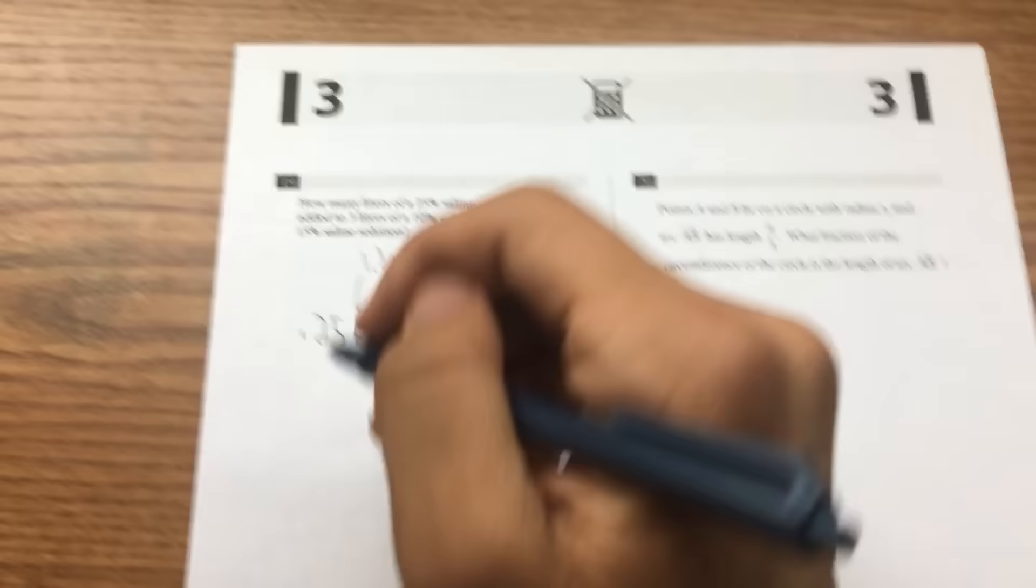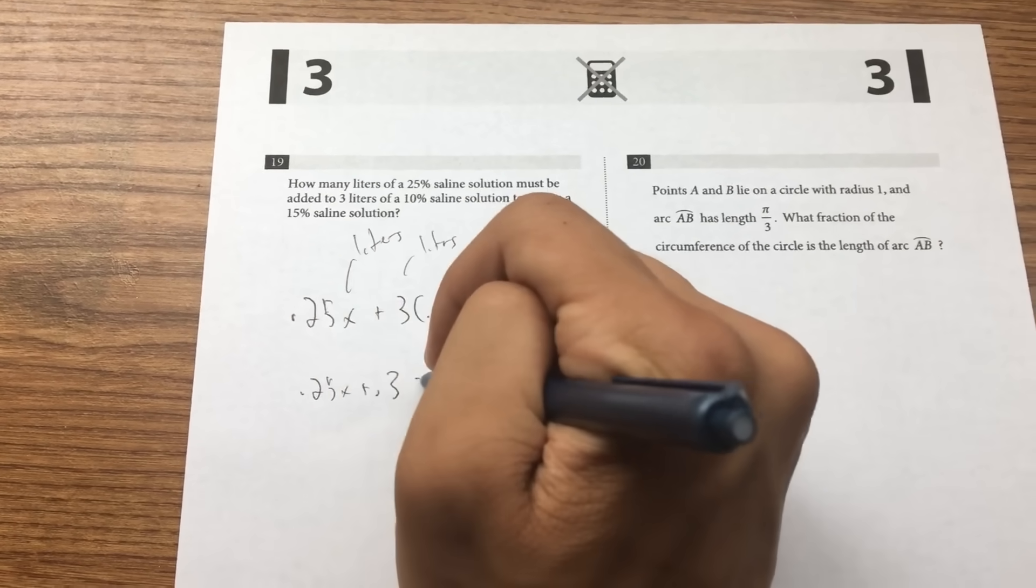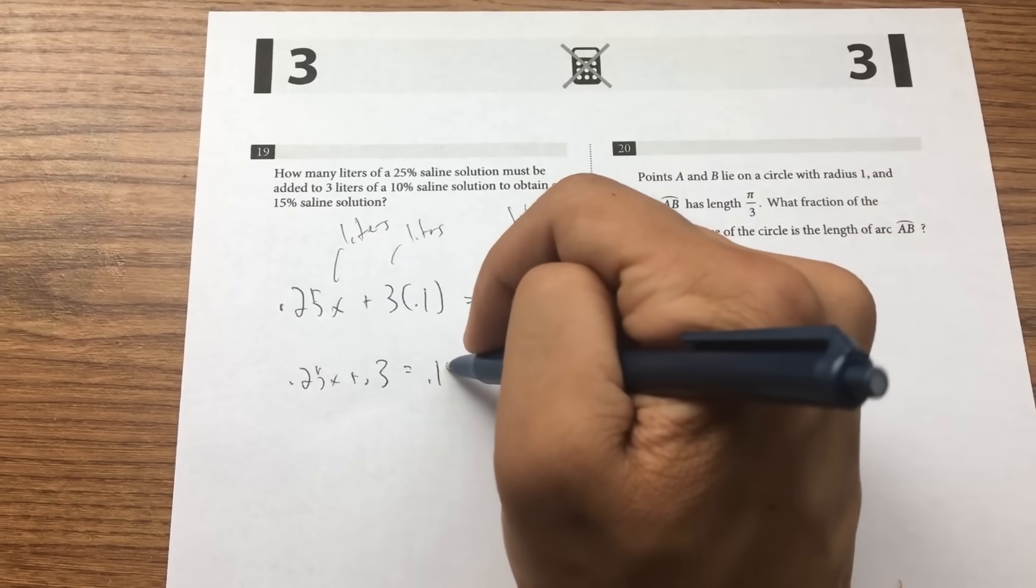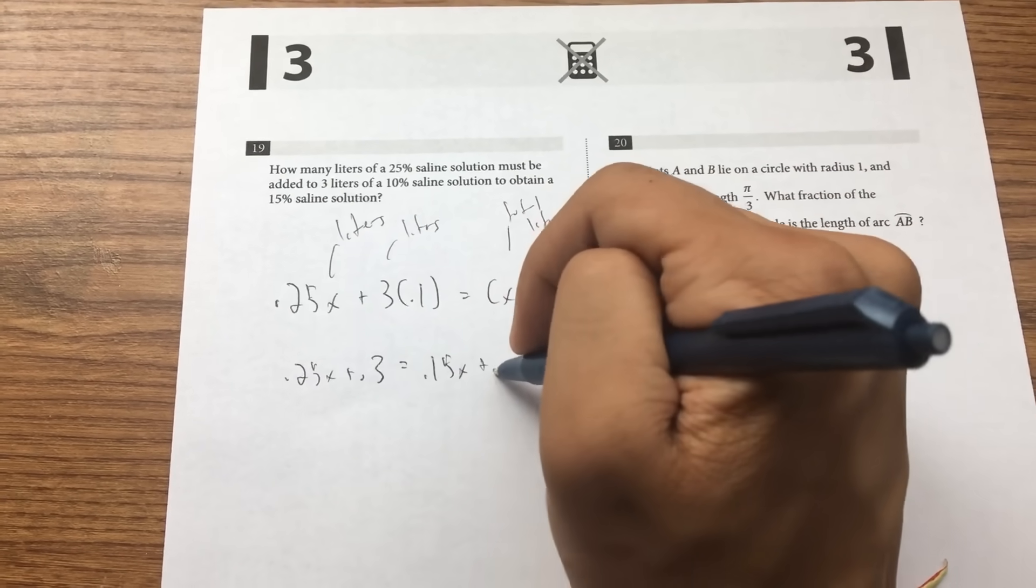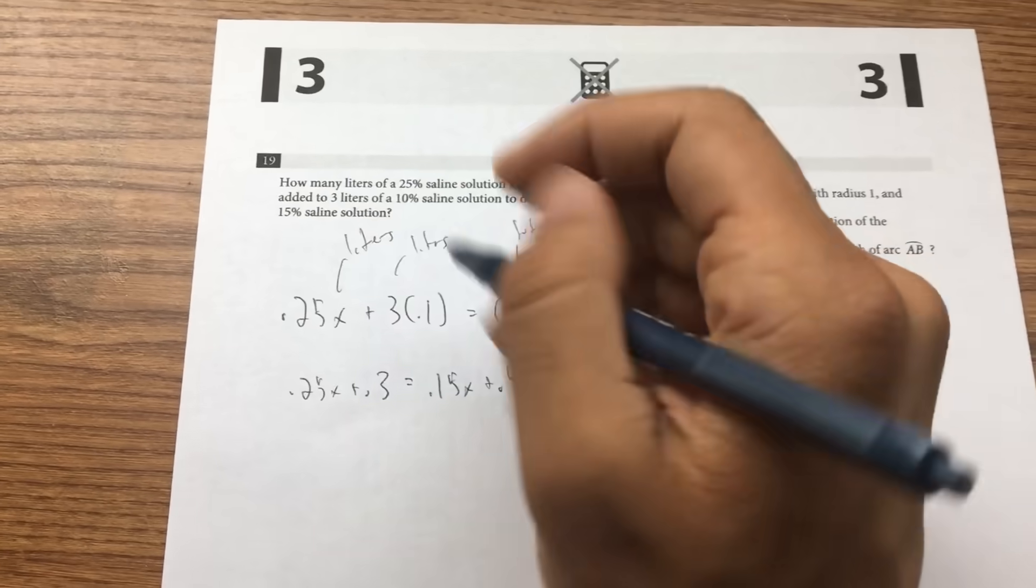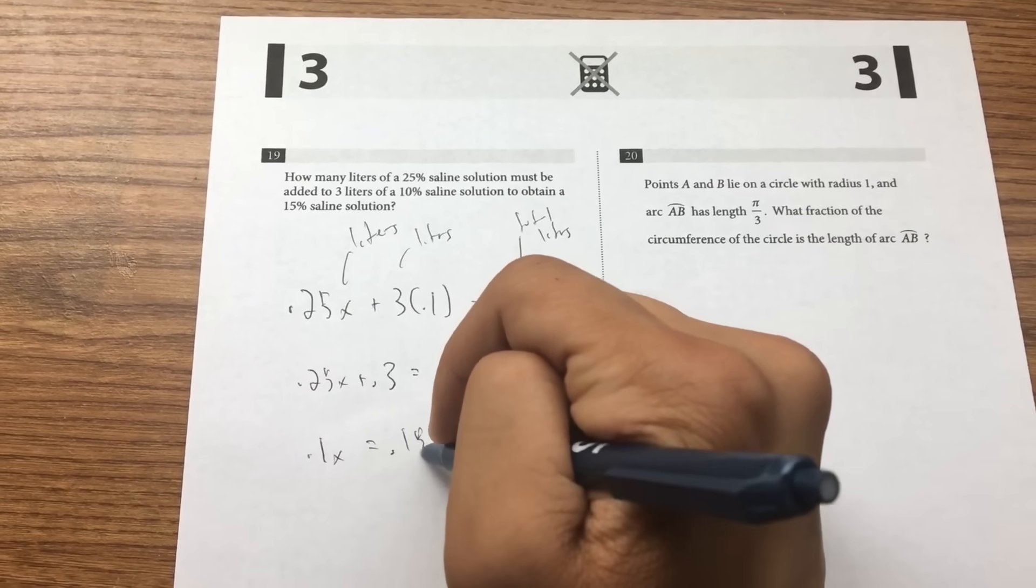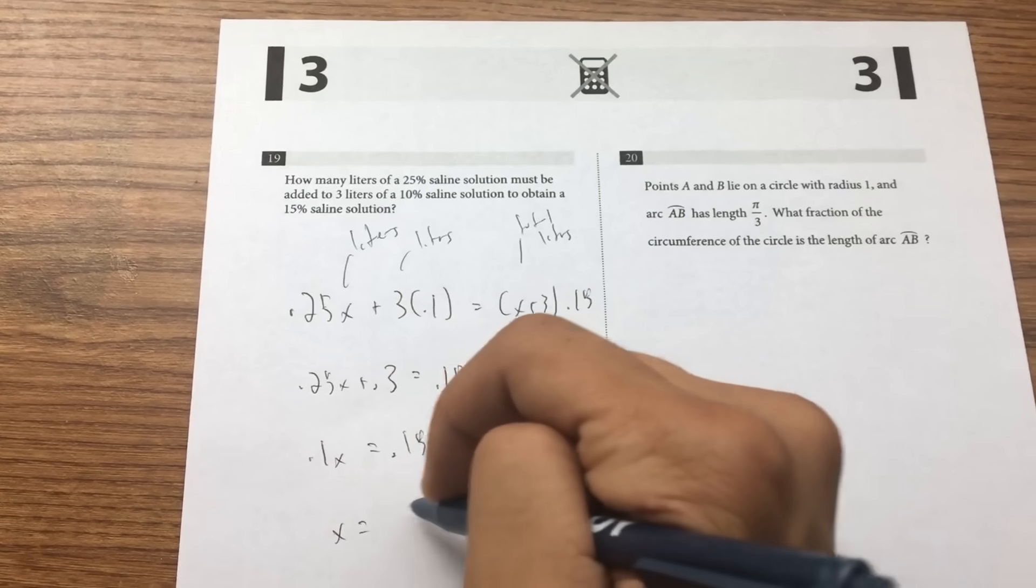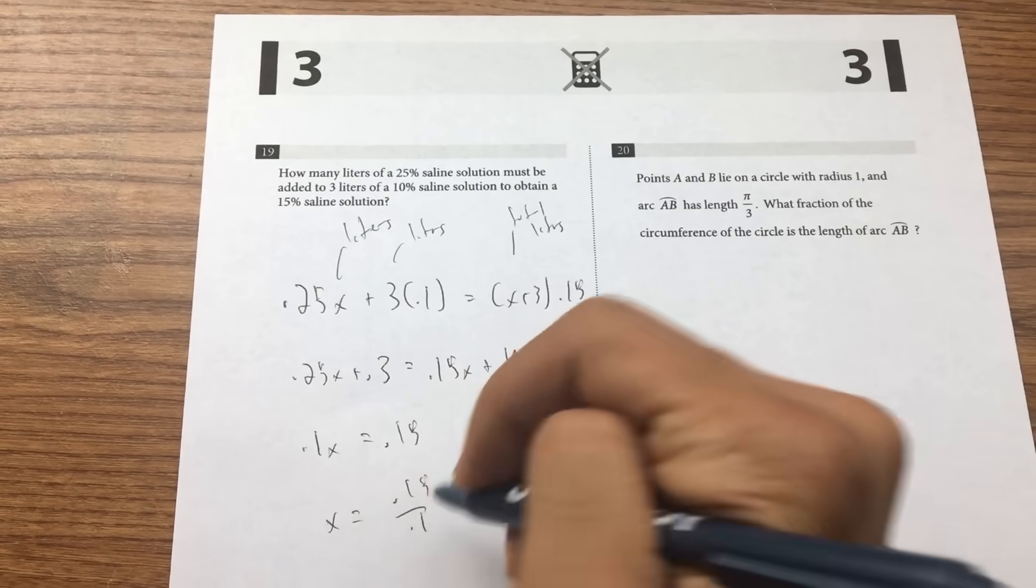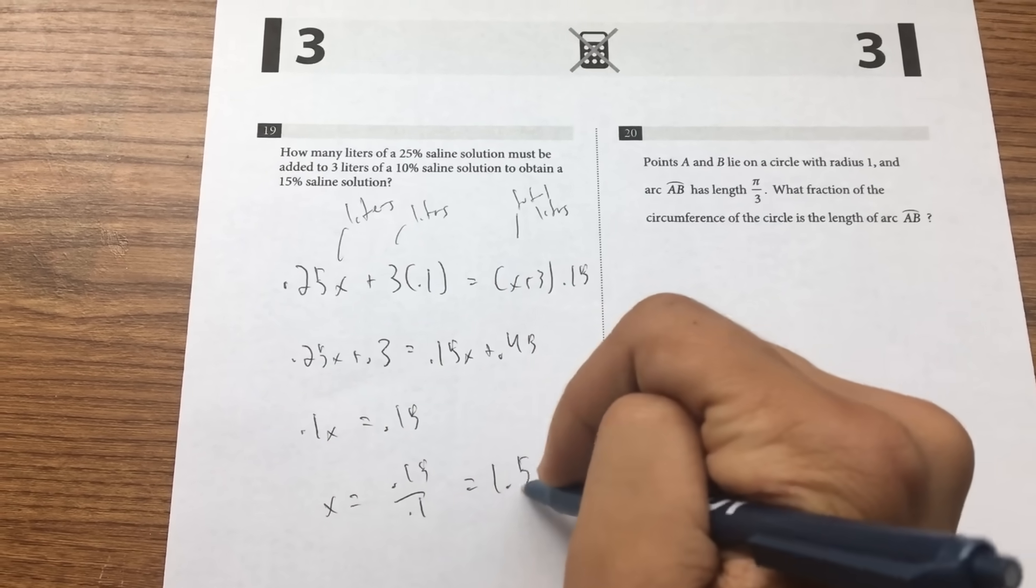So let's simplify it. 0.25x plus 0.3 is equal to 0.15x plus 0.45. Simplify this, you get 0.1x equal to 0.15. x is equal to 0.15 over 0.1, which is equal to 1.5.